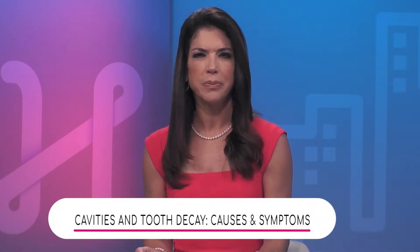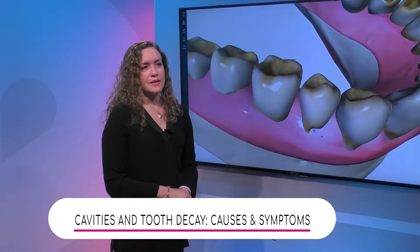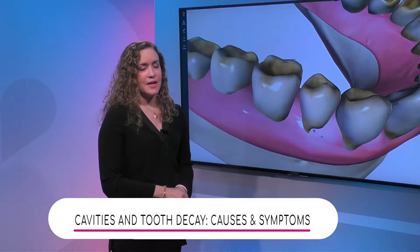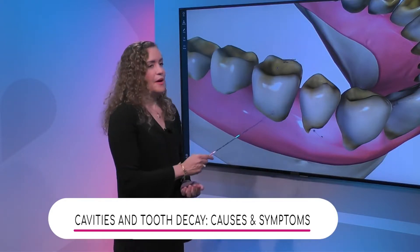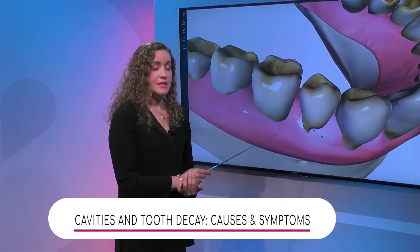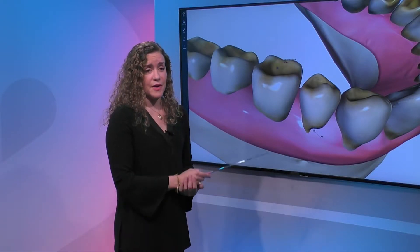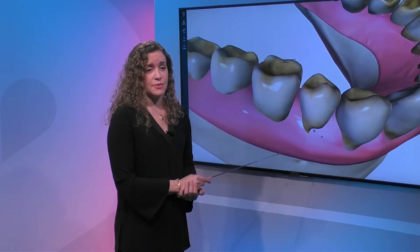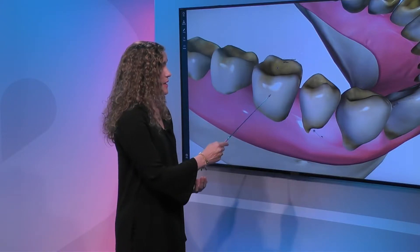Can we talk about tooth decay and what it is? Well, tooth decay is when the acid produced by bacteria has damaged the enamel and therefore the dentin is exposed, and it can progress all the way down to the pulp of the tooth, which is inside.